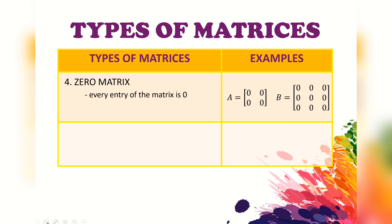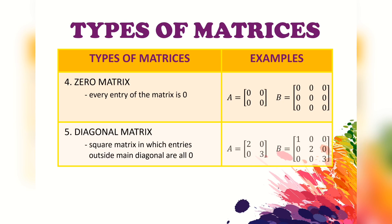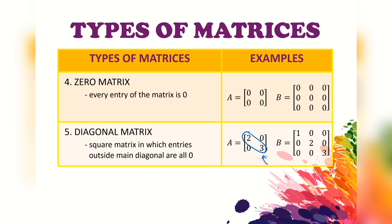Number four is a zero matrix, where every entry of the matrix is zero — you can take a look at the examples. Next is a diagonal matrix, which is a square matrix in which entries outside the main diagonal are all zero. The circled entries are what we call the main diagonal, and as you can see the entries outside the main diagonal are all zero.